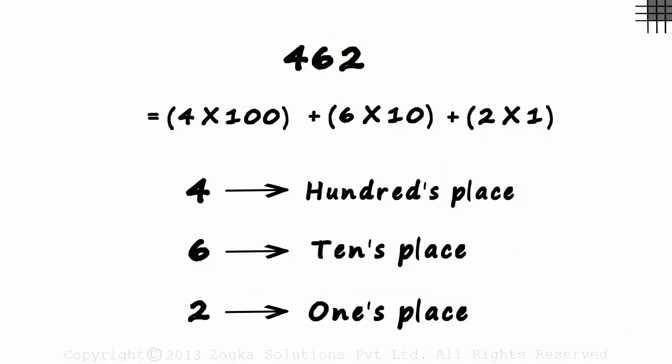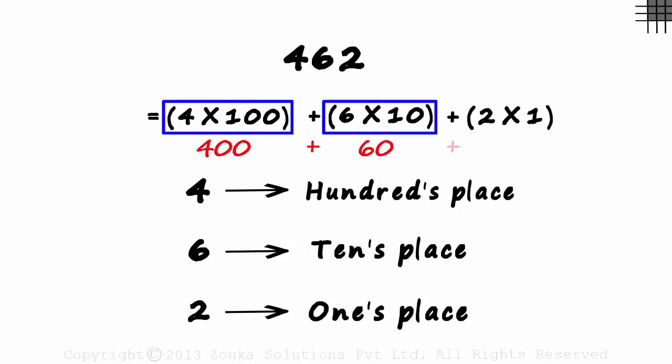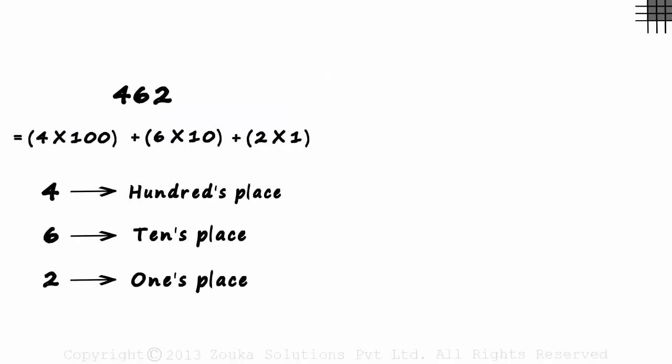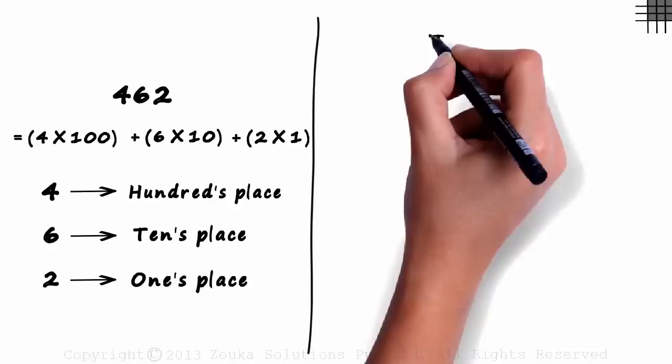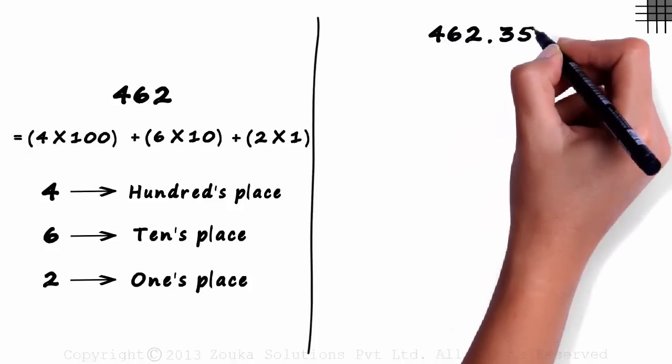That's how we understand the number 462: 400 plus 60 plus 2. But what if we have a decimal point in the number? Say a number like 462.351. How do we understand this number?